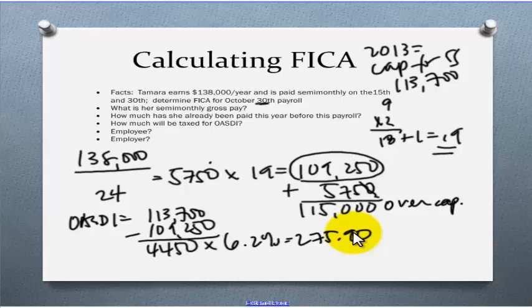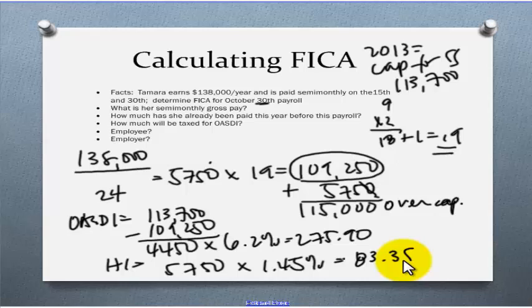So, $4,450 times 6.2% is going to give us $275.90. Now, how much is taxable for HI? There is no cap, so the whole pay of $5,750 is going to be taxable for that. Our HI tax rate is 1.45%, and if you do the math there, $83.38.